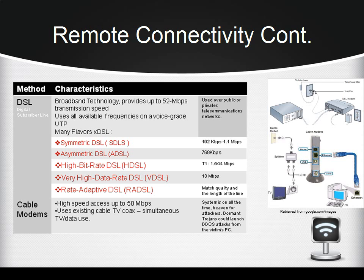Cable modems provide high-speed access up to 50 megabits per second. Coaxial and fiber are used to deliver TV stations, and one or more channels on these lines are dedicated to data transfer. Cable modem and DSL lines are considered hackers' heaven — systems using these connections are always online and exposed to viruses and trojans. It may be a good idea to turn off the computer or modem when not in use, or enable a firewall and add a router between the cable modem and the internet connection.